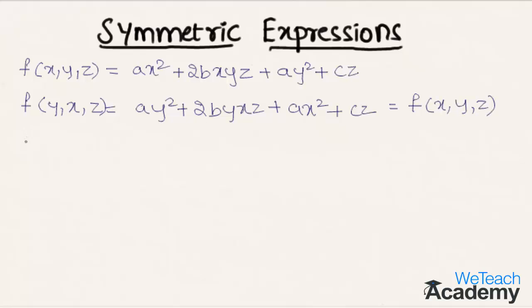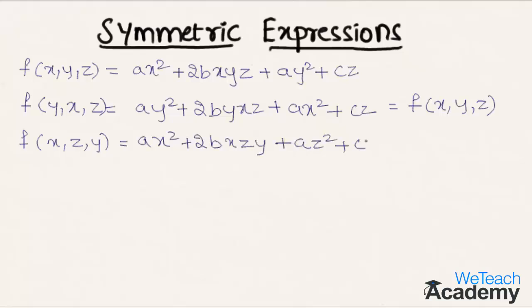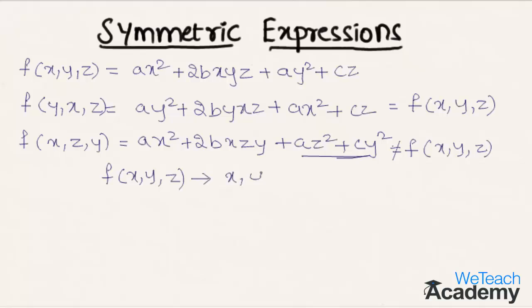Now similarly let us replace y with z and z with y. We get f of x, z, y as ax squared plus 2bxyz plus az squared plus cy. We observe that both expressions are not equal, so f of x, z, y is not equal to f of x, y, z. From this we conclude that f of x, y, z is symmetric in x and y, but f of x, y, z is not symmetric in y and z. So the expression f of x, y, z is not a symmetric expression.